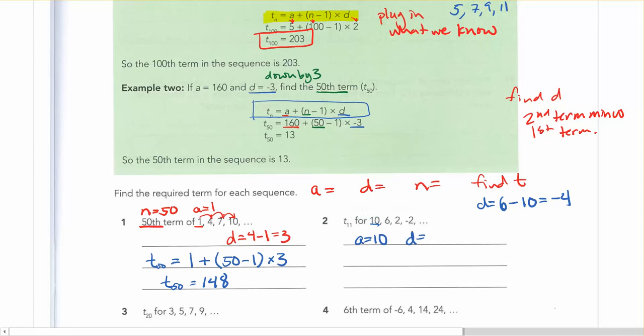So I can see here, it makes sense that I get a negative, because the numbers are getting smaller every time. So d is negative 4. And n, remember I said that little tiny number underneath the t? That's going to be your n, so n is equal to 11.